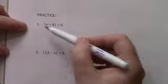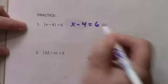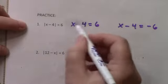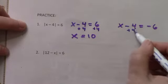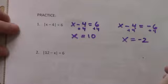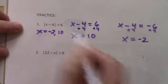Let's turn to page 8 and do a little more practice. Remember, we do each problem two times. For problem 1, we set up: x minus 4 equals 6, and also x minus 4 equals negative 6. Adding 4 to the first gives x equals 10. Adding 4 to the second gives x equals negative 2. So x can equal negative 2 and 10.